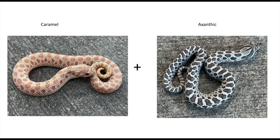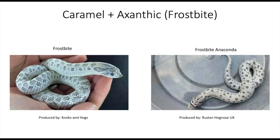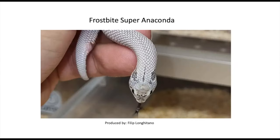Next up we're going to combine caramel with the xanthic gene, which removes the yellow, red, and orange pigment, leaving you with gray, white, and black. A caramel combined with xanthic is called a Frostbite. So we have a regular frostbite on the left, then a frostbite anaconda with reduced pattern on the right, and then a frostbite superconda — you can see the reduced head pattern from the caramel gene.